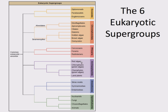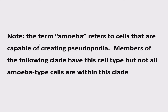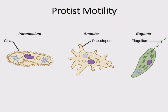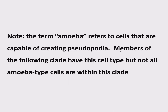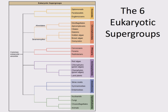Before moving to the next supergroup, a frustrating disclaimer. The term 'amoeba' refers to cells capable of creating pseudopodia — crawling along and extending temporary projections. The next clade is called Amoebozoa, and members have this amoeba cell type, but not all amoeba-type cells are within this clade. So there will be plenty of amoeba cells outside of Amoebozoa.